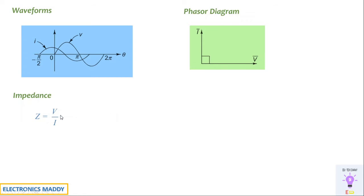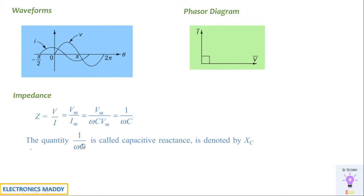For the impedance offered, from the fundamental definition Z = V/I, using the peak values Vm and Im, and substituting Im = omega C Vm, cancelling Vm gives the impedance as 1/(omega C). This quantity 1/(omega C) is called capacitive reactance and is denoted by Xc. This is the point where the concept of capacitive reactance came into existence.